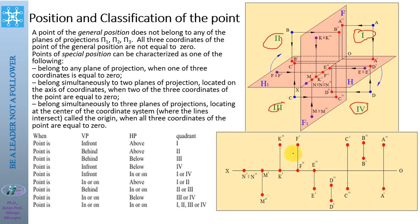Point A is in the first quadrant. Its frontal projection is above the X-zero line, and its horizontal projection is below the X-zero line. Point B is in the second quadrant — above the horizontal plane and behind the vertical plane. Its frontal projection is in front of the frontal plane, and its horizontal projection is above the horizontal plane.